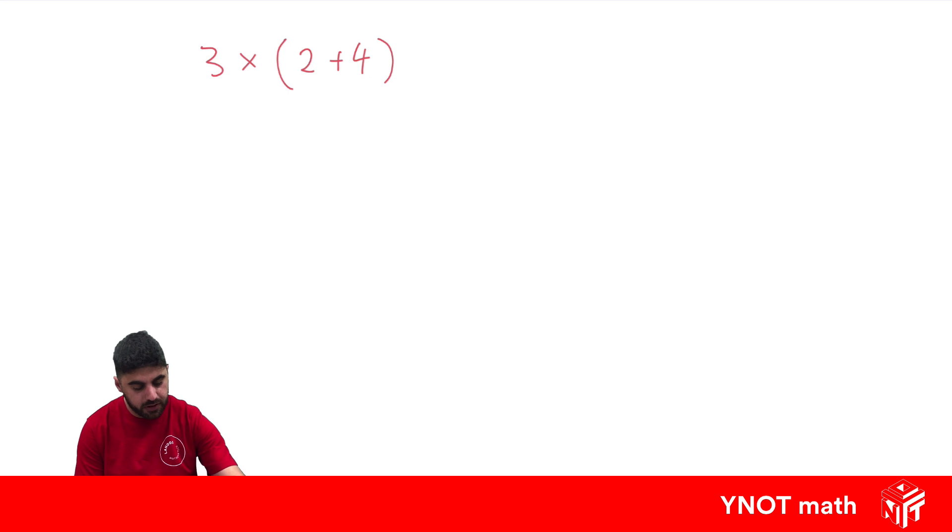So here I could do, if I was doing my order of operations, I'd do 2 plus 4 first, which is 6, and then I get 3 times 6, which is 18.